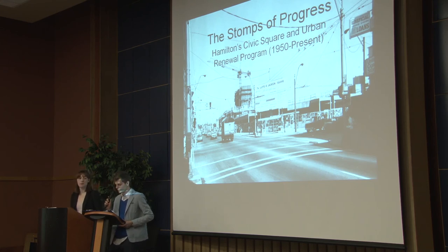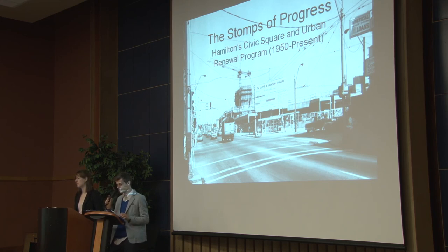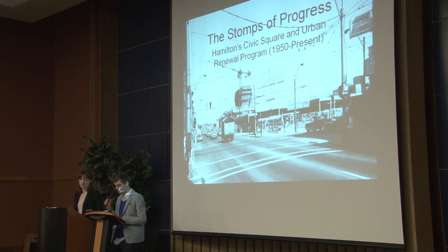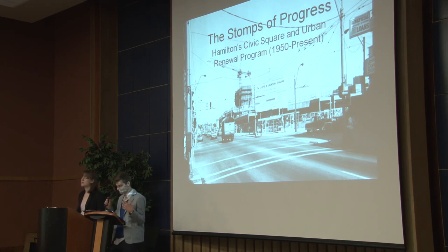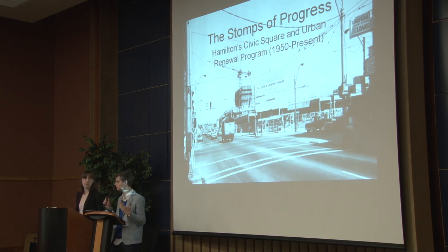Modernist architecture championed the Congress International Architecture Modern. Rejecting 19th century historicism, modernist architects favored clean, straight lines and used concrete and steel to create buildings without ornamentation. Believing their buildings would bring positive change, modernist planners aspired to create functional cities where efficient transportation corridors could move traffic quickly between distinct zones — one for industrial, one for commercial, and one for housing.